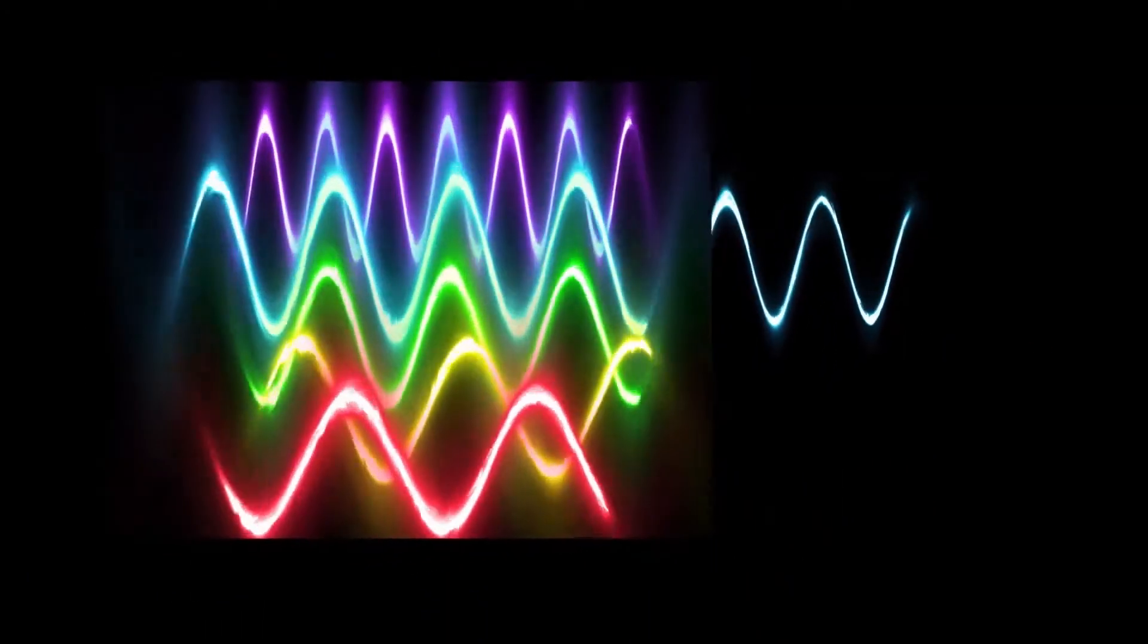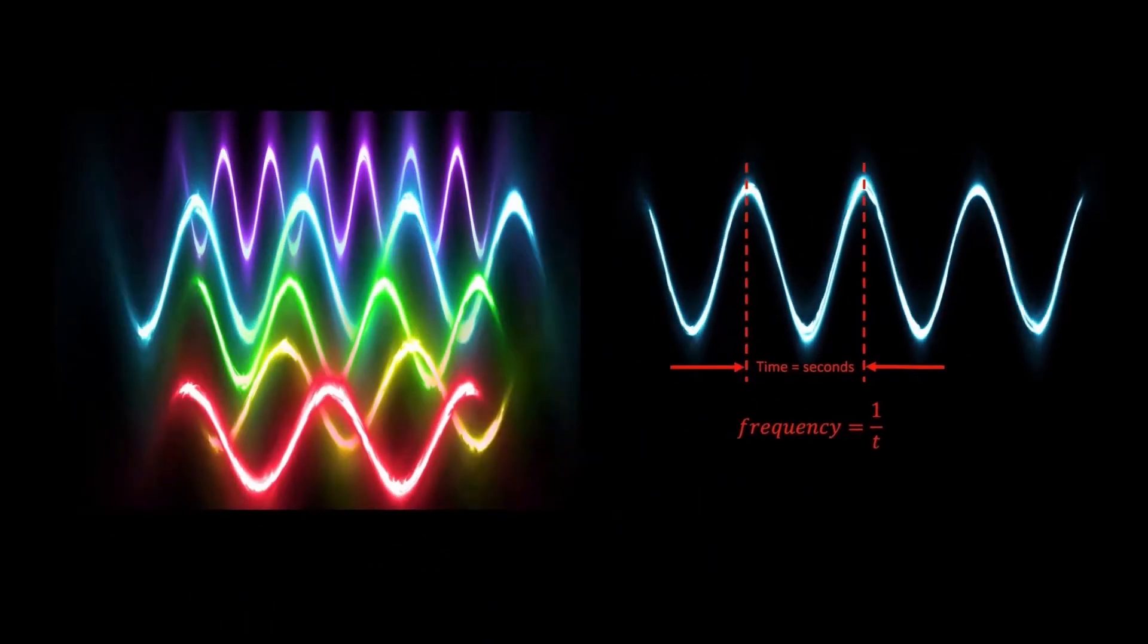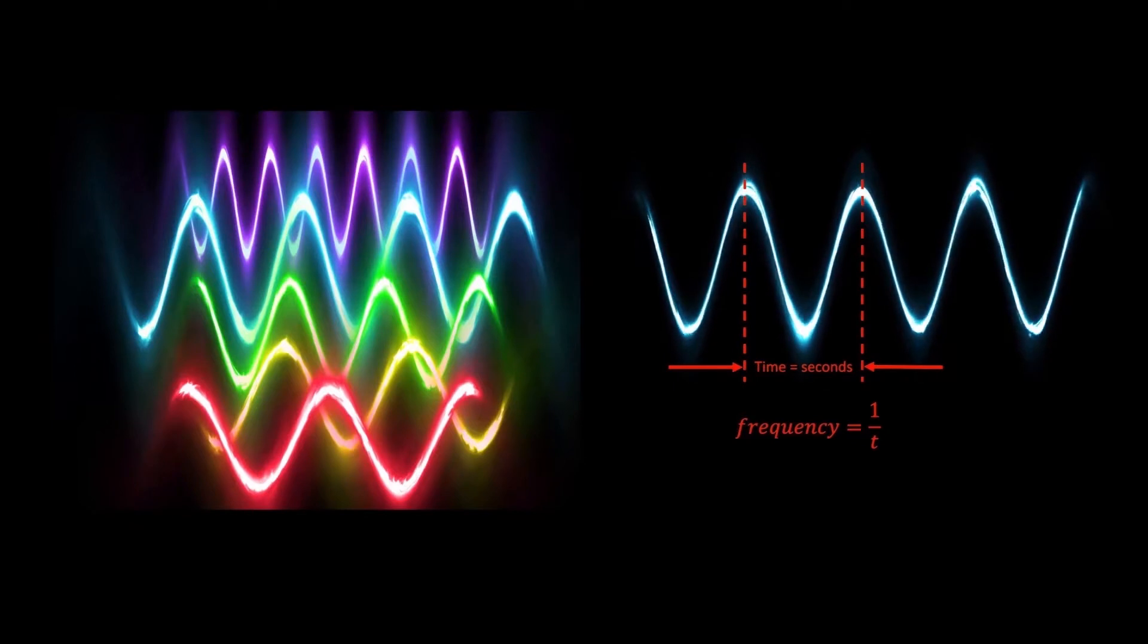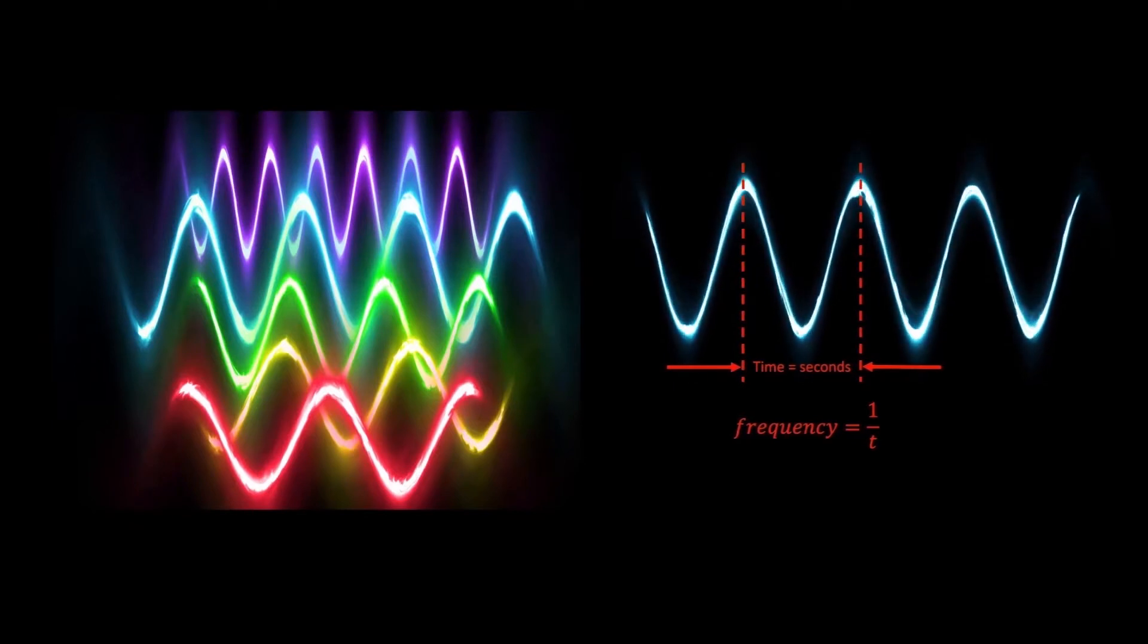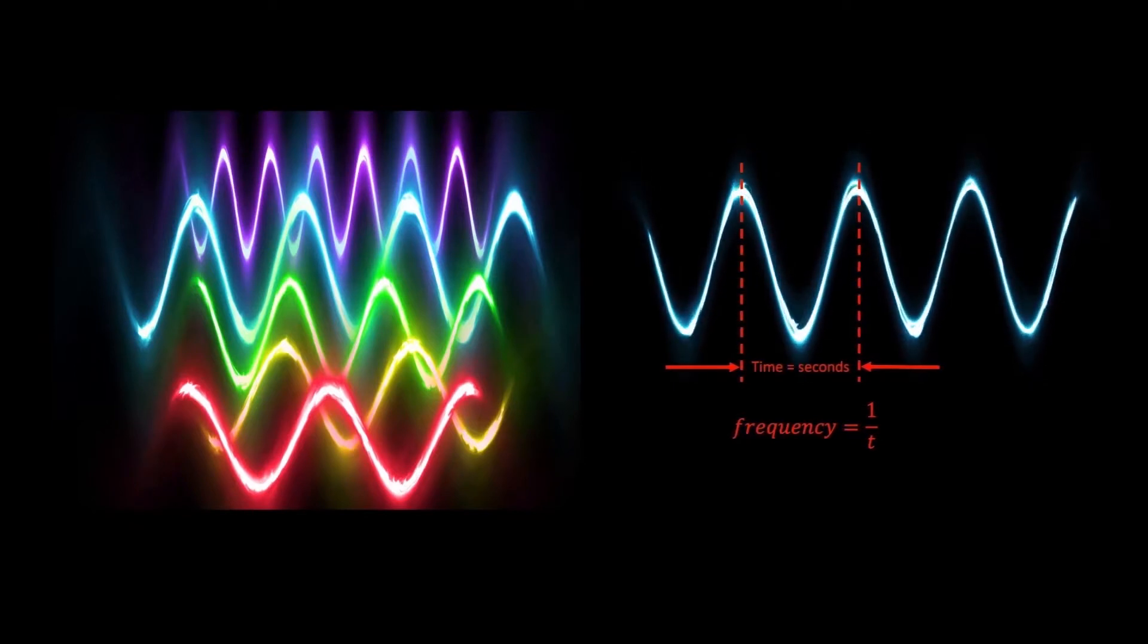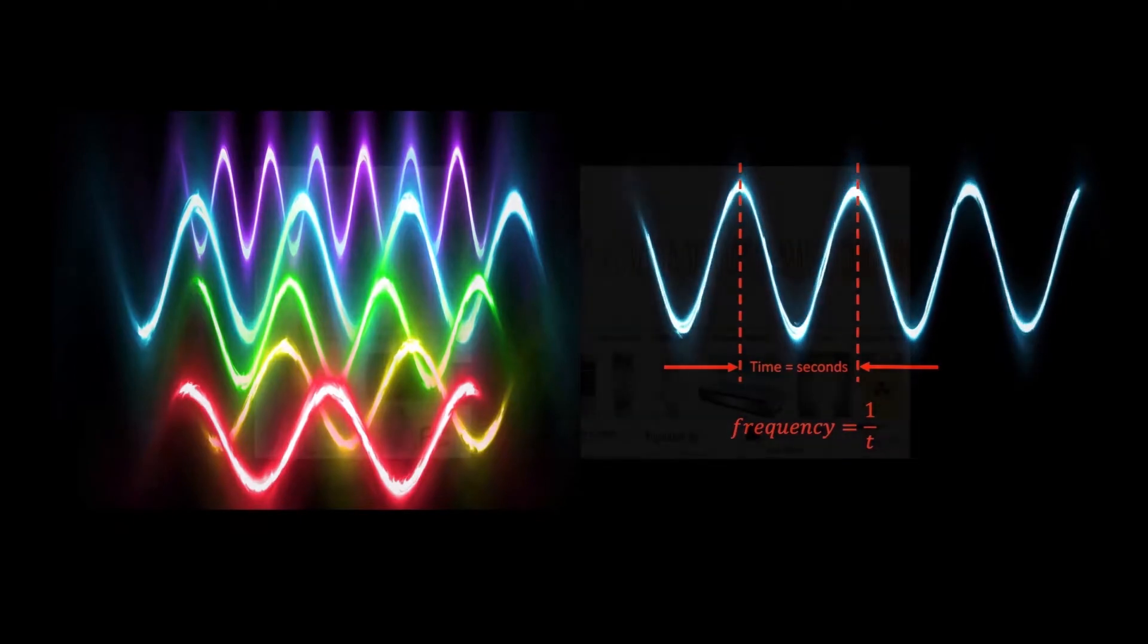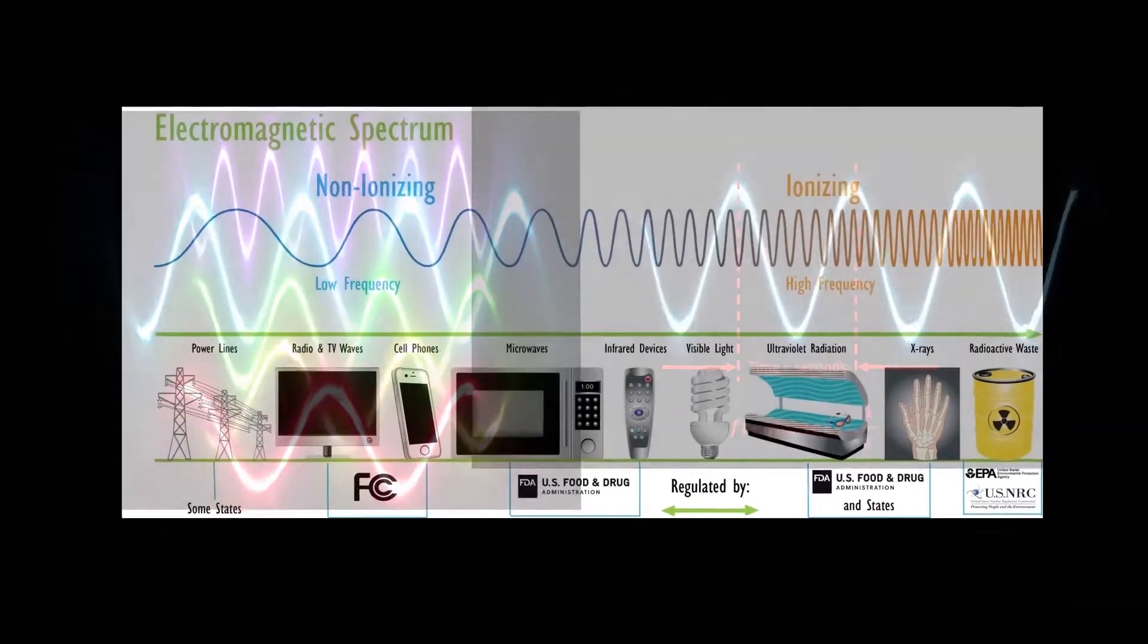So now that we know what light is, photons or bundles of electromagnetic energy that is differentiated by frequency, measured in Hertz, which is the reciprocal of time for one cycle. This brings us to the electromagnetic spectrum.